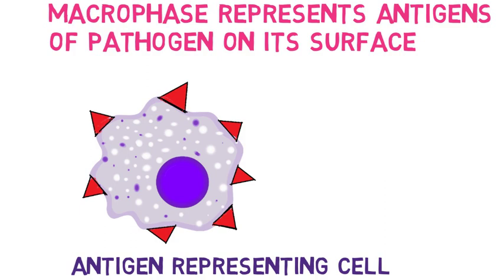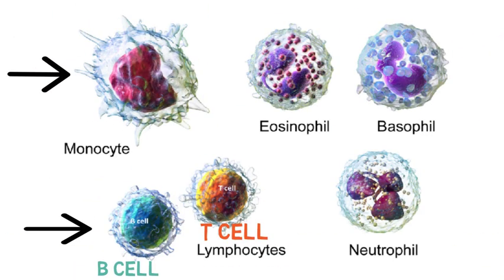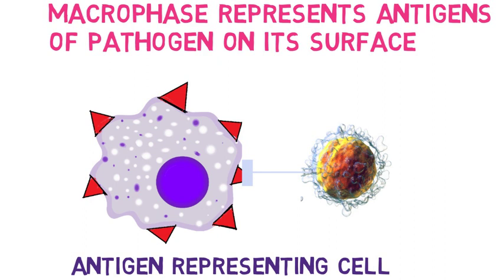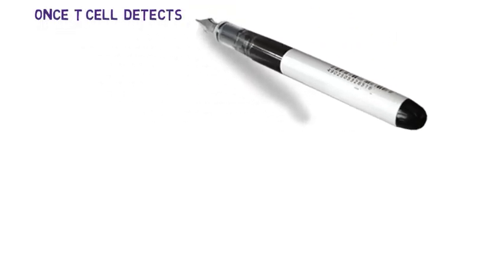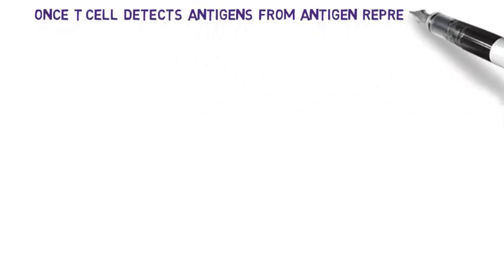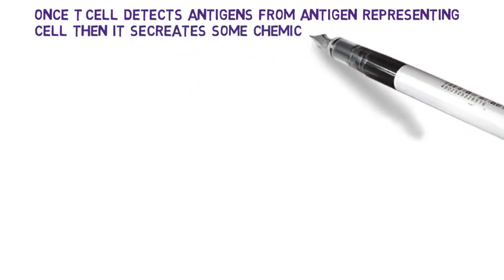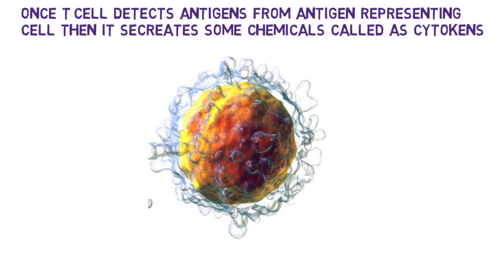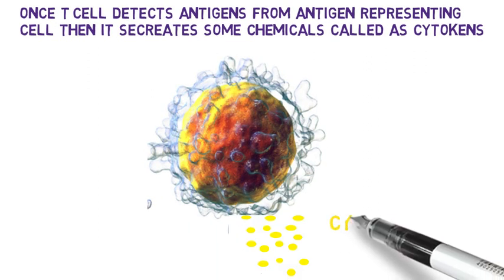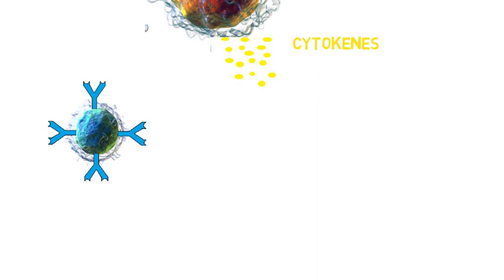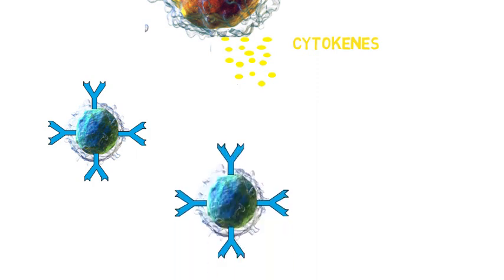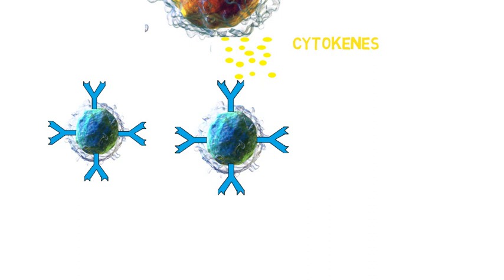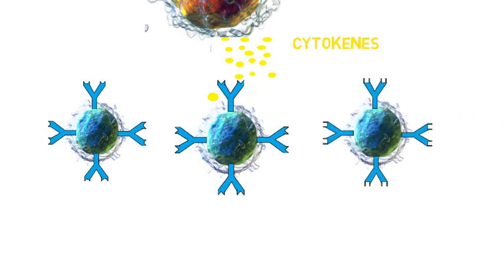Then T-cells, which are a type of Lymphocyte, detect these antigens. Once the T-cell detects these antigens from the antigen-presenting cell, it secretes some chemicals called cytokines.